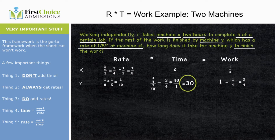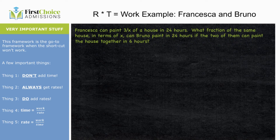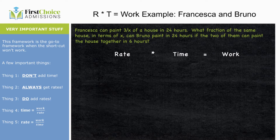Let's try another one. Francesca can paint three over X of a house in 24 hours. What fraction of the same house, in terms of X, can Bruno paint in 24 hours, if the two of them can paint the house together in six hours? I really don't understand what any of that means, but we know one thing: rate times time equals work, and that is a tremendous advantage. The framework will guide us through — so we pull out who the players are: Francesca, Bruno, and together.